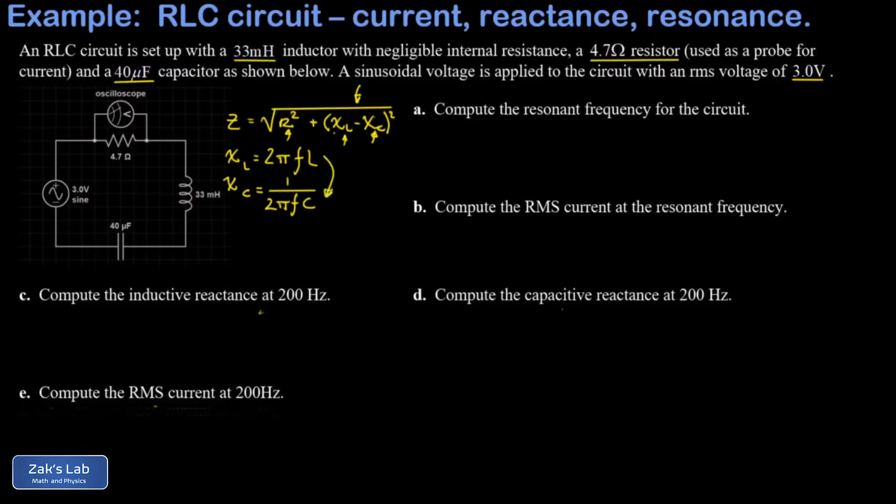If you set the inductive and capacitive reactance equal and solve for the frequency, that's the resonant frequency that maximizes the current in the circuit. And I'm just going to quote the formula for it here. So there's our summary of all the tools we're going to use. Let's get into the parts of the problem.